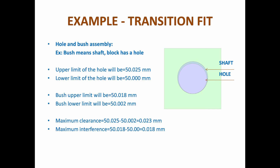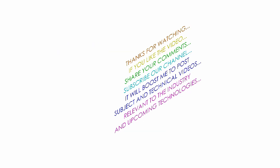Example of transition fit: a hole and bush assembly, where the bush is the shaft and the block has a hole. Upper limit of hole: 50.025 mm; lower limit: 50 mm. Bush upper limit: 50.018 mm; lower limit: 50.002 mm. Maximum clearance = 50.025 minus 50.002 = 0.023 mm. Maximum interference = 50.018 minus 50 = 0.018 mm.